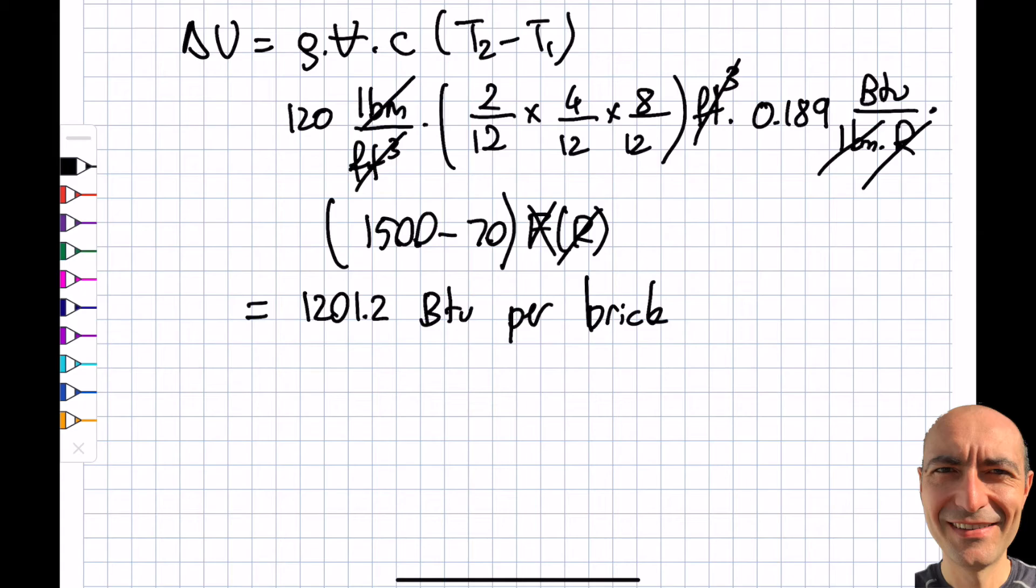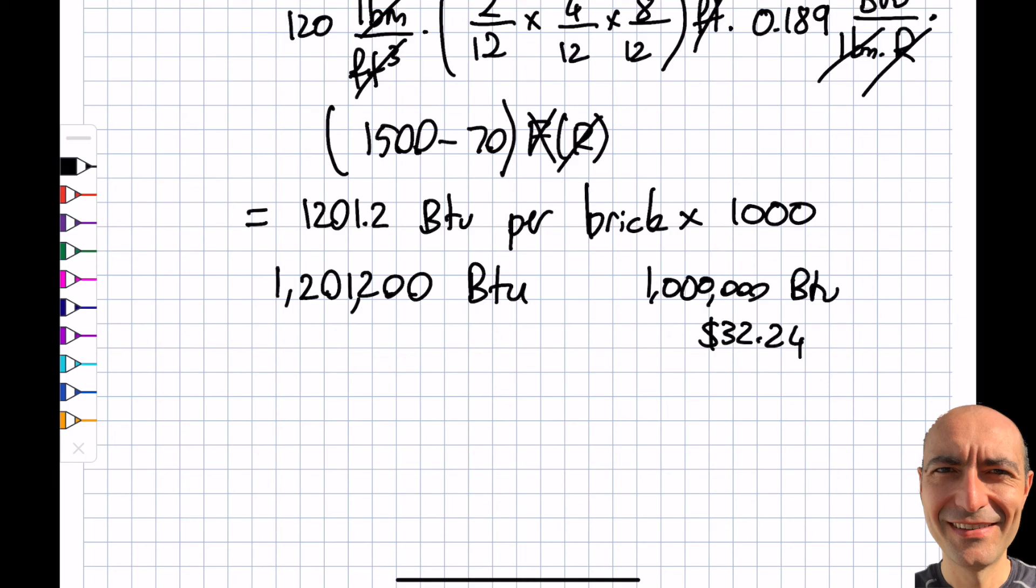Again, I'm going to now continue with my assumption. So if this one brick, I'm going to say it's linearly proportional. In reality, then this may not be completely accurate, but this is the best I can do. So this becomes, for 1,000 of them, I'm going to have 1.2 million BTUs. And the question gave me that 1 million BTU costs $32.24. Then you can see I'm going to multiply this by 1.2, something like that. And if I do it, you will get yourself the total cost to heat this particular 1,000 bricks, is going to be close to $40, $38.72.